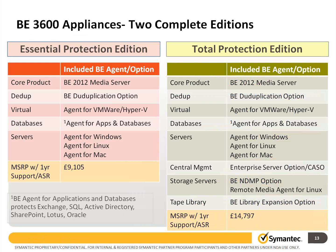Here's a high-level overview of the differences between the Essential Protection Edition and the Total Protection Edition. Both include unlimited agents for VMware, Hyper-V, Windows, Linux, Mac, and application database agents. The Total Protection Edition additionally supports NDMP — so if you have a NetApp filer you can use the NDMP protocol to back it up — along with support for additional tape library drives and the Enterprise Server option, which gives you the ability to replicate from one appliance to a second appliance.